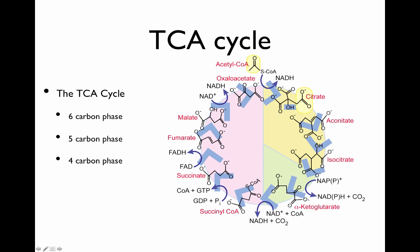The citrate is converted through a few isomerizations and then oxidized. Isocitrate is oxidized, NADH is formed, and one CO2 is released, and this is oxidized to alpha-ketoglutarate to go into the 5-carbon phase. Then another oxidation takes place, removing more electrons in the form of NADH, and succinyl-CoA is made. Succinyl-CoA is then converted into succinate, and substrate-level phosphorylation occurs, where GTP is formed from GDP. You get another electron extracted as FADH2, and then fumarate is converted back to oxaloacetate to complete the cycle.